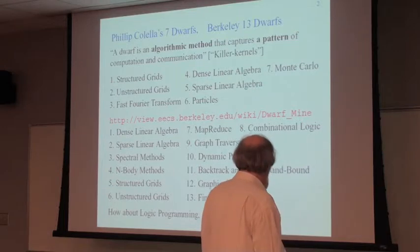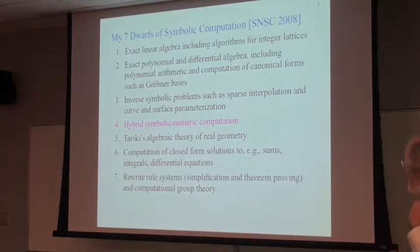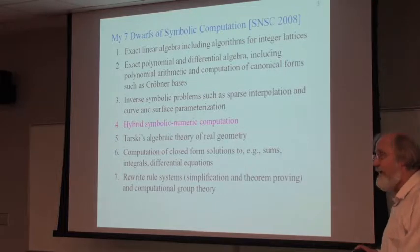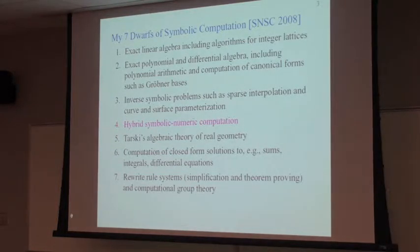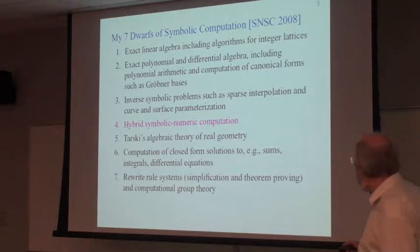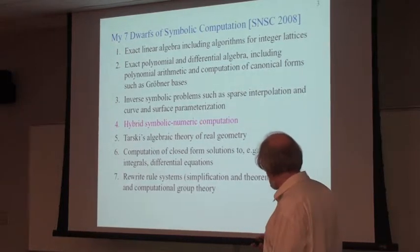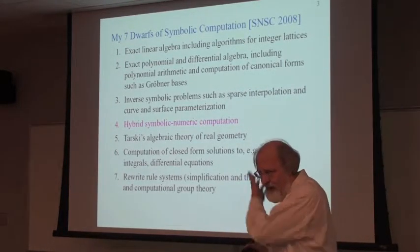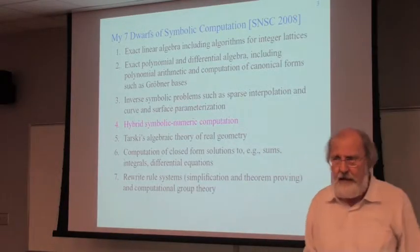And so, what to do? Well, you make your own list. So, I made the list of the seven dwarfs. I kept seven. I got the joke. Seven dwarfs of symbolic computation. So, these are the methods which I made this list fairly quickly, actually, before a talk in 2008.